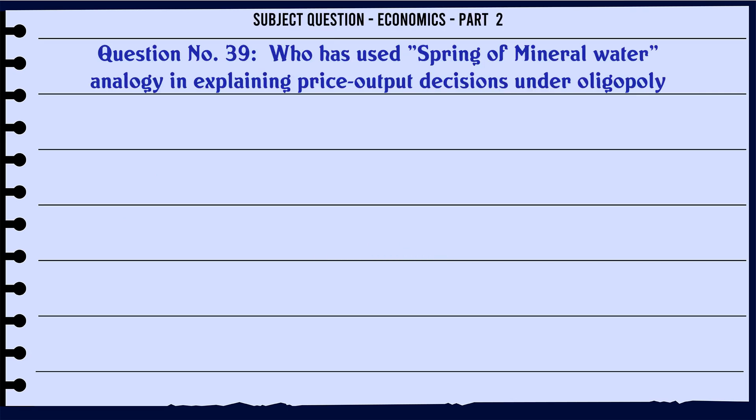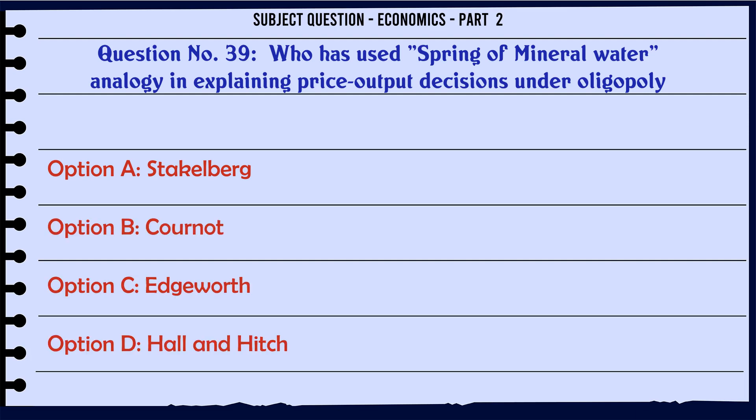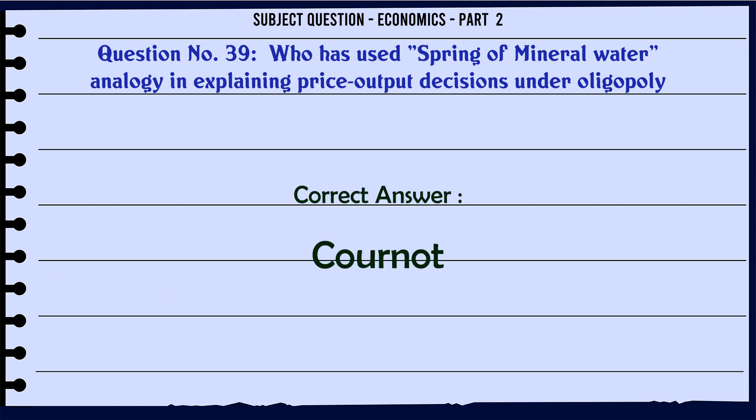Who has used the spring of mineral water analogy in explaining price-output decisions under oligopoly? A. Stackelberg. B. Cournot. C. H. Walras. D. Hall and Hitch. The correct answer is: Cournot.